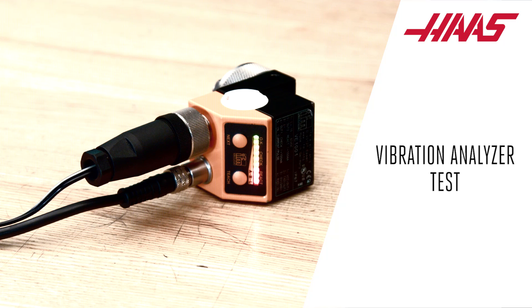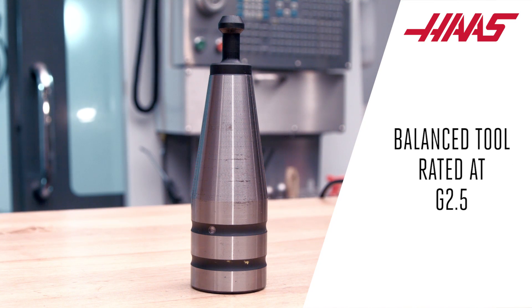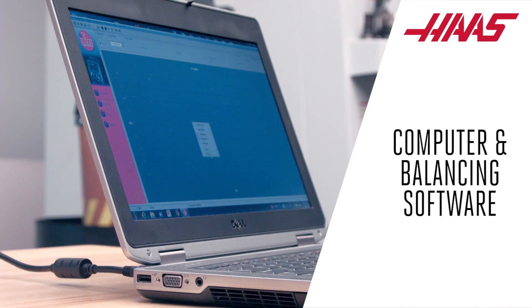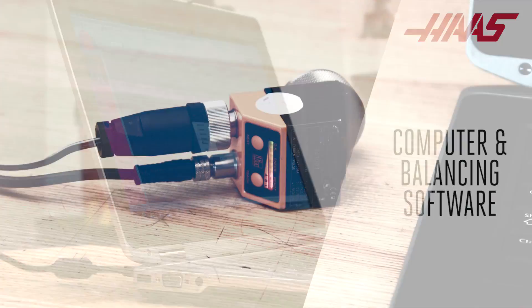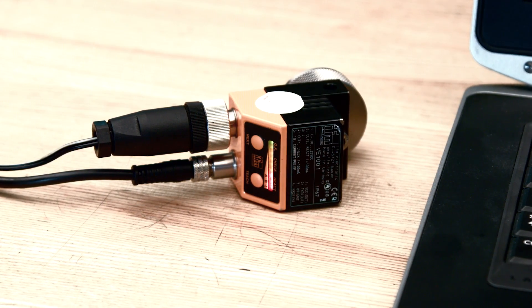The first way is to use a vibration analyzer, your balance tool holder rated G2.5, and a laptop with the correct software. This is the preferred method of balancing the spindle.